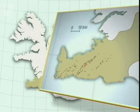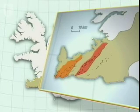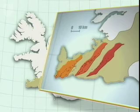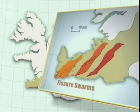These fissures can be grouped into three separate zones, which are called fissure swarms. They represent zones in the crust through which basaltic magmas from the mantle are channelled.